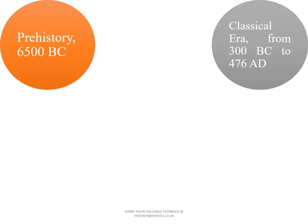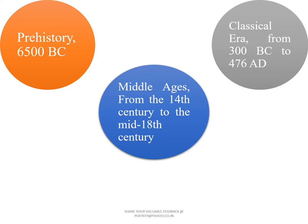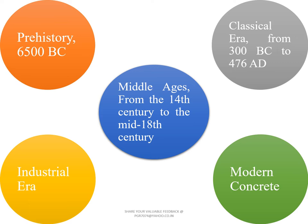When we look at the history of concrete, the prehistory started since 6500 BC. There is a classical era which lasted from 300 BC to almost 476 AD, generally the Roman Empire era. Then there is a middle age from the 14th century to the mid of the 18th century, followed by an industrial era and then modern concrete. In this module we will discuss all four stages except the modern concrete part.